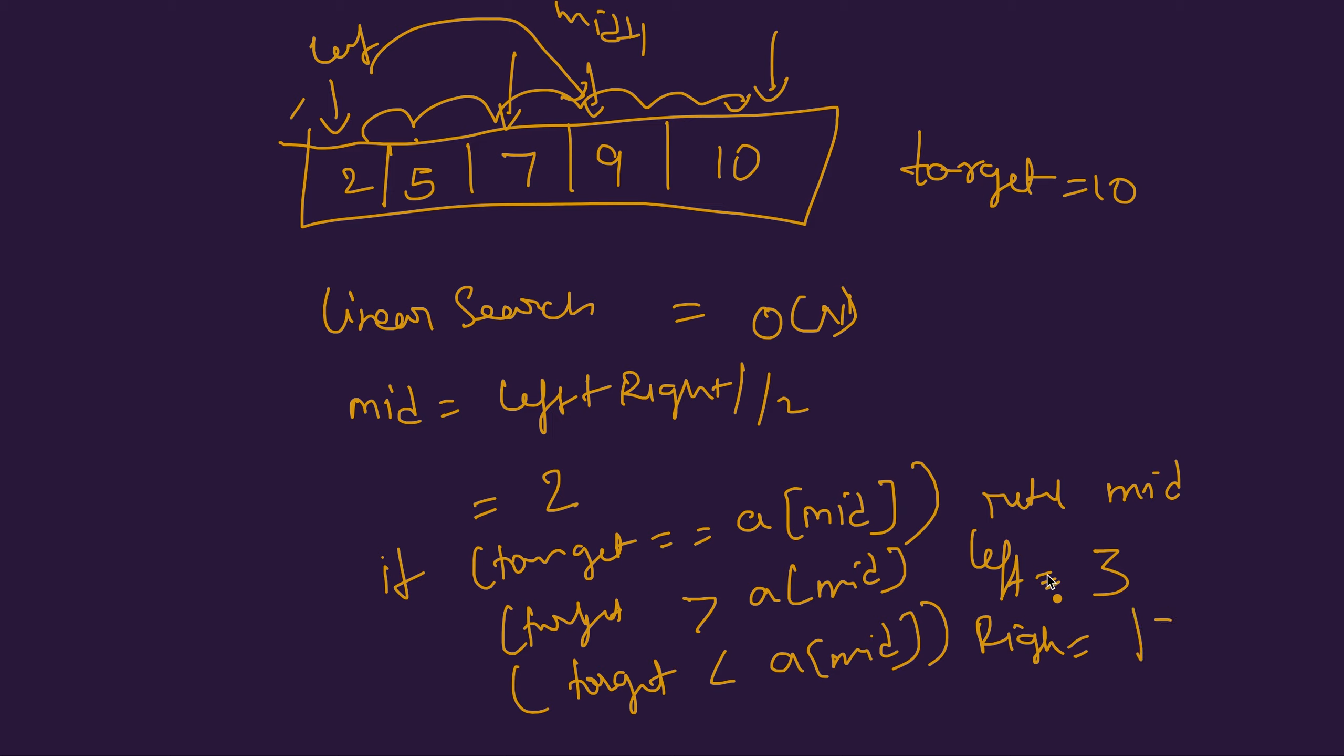In this case left becomes 3 and right is still 4 because the target is greater than the mid element. What we are trying to do is we are trying to eliminate the search for all the numbers that are lower than the target.